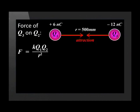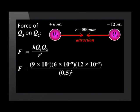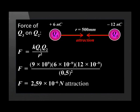We use Coulomb's law to calculate the force of Q2 on Q3. We substitute the charges on Q2 and Q3 and use the distance between Q2 and Q3. The resulting force of 2.59 times 10 to the minus 6 Newtons is also a force of attraction because the objects are oppositely charged.